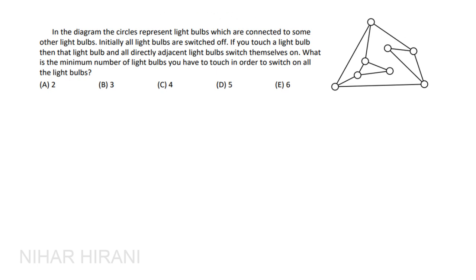Now the question is asking you to turn on all the bulbs by switching on the minimum number of bulbs. It means you need to turn on the bulb which is connected with the maximum number of bulbs. If you turn on one bulb, you need to do it in such a way that it turns on many other bulbs.